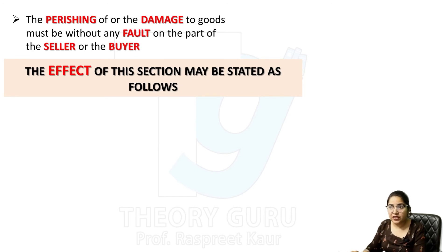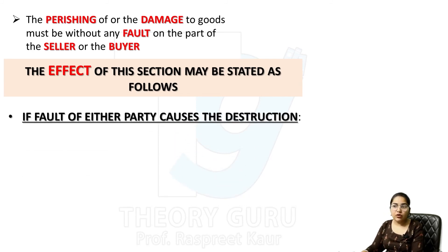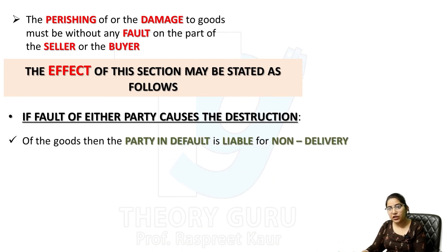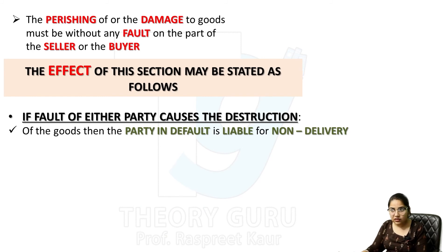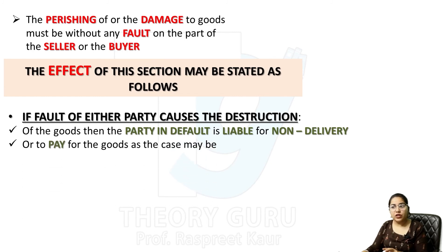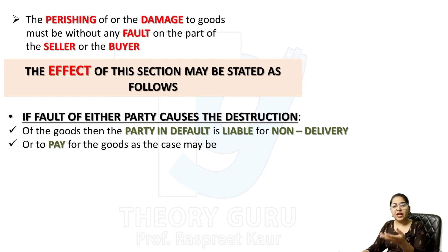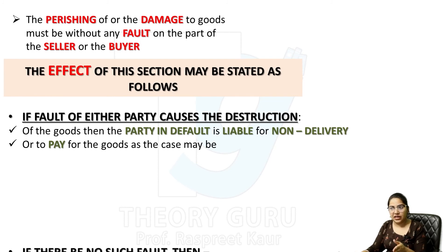Effect of Section 8: अगर fault of either party causes the destruction, तो वो party उस चीज के लिए liable होगी। Party in default is liable for non-delivery or to pay for the goods as the case may be — या तो उसको non-delivery के लिए जिम्मेवार ठहराया जाएगा, या उसको नुकसान का pay करना पड़ेगा।